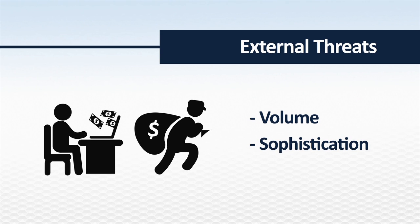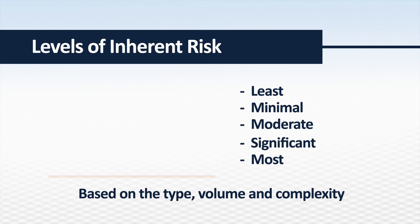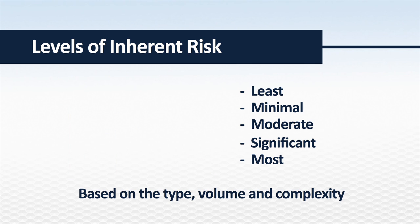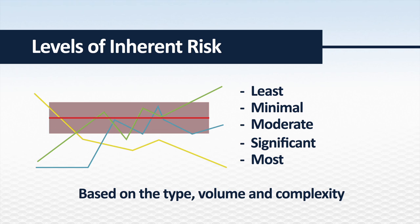Cyber attacks, whether attempted or successful, affect a credit union's inherent risk exposure. This domain considers the volume and sophistication of these attacks. Each domain may pose a different level of inherent risk ranging from least, minimal, moderate, significant, or most inherent risk. Management determines the overall risk level based on the type, volume, and complexity of the operations and the potential threats.